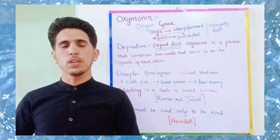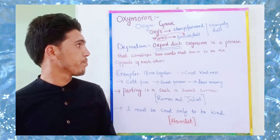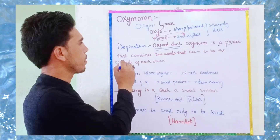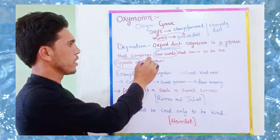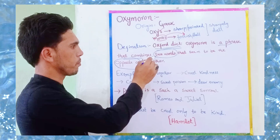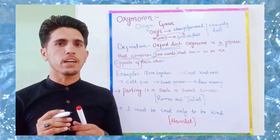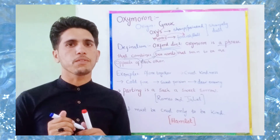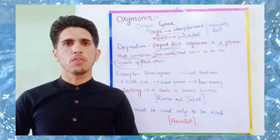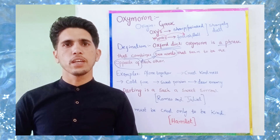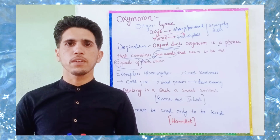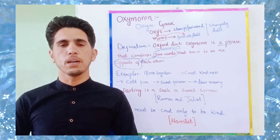Looking at the definition of oxymoron, the Oxford Advanced Learner's Dictionary defines oxymoron as a phrase that combines two words that seem to be the opposite of each other. The crux of the definition is that it combines two opposite ideas, words, phrases, or sentences that are opposite in meaning. So we can define oxymoron as a figure of speech that shows two contradictory ideas, combining two different words or phrases having two different meanings altogether.